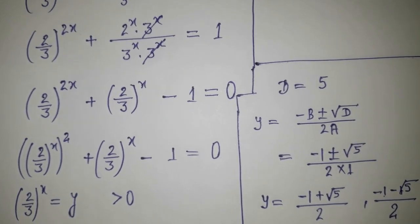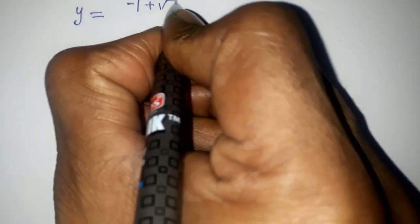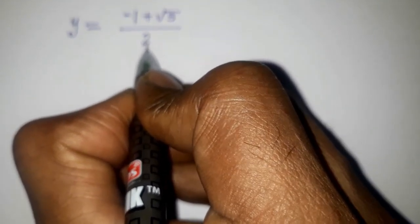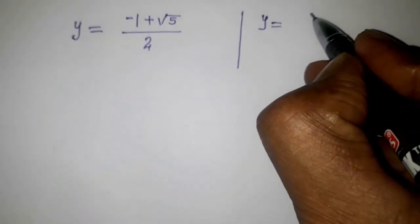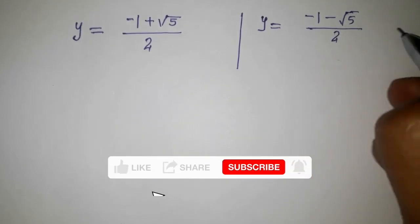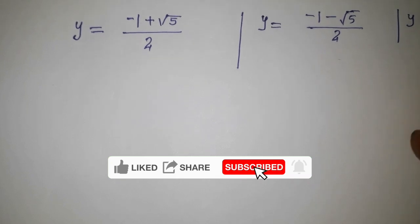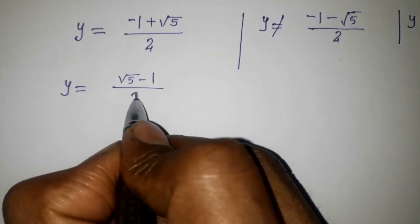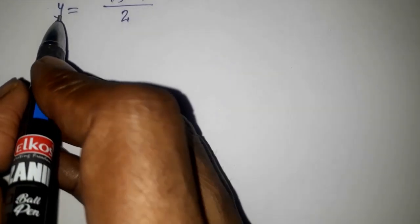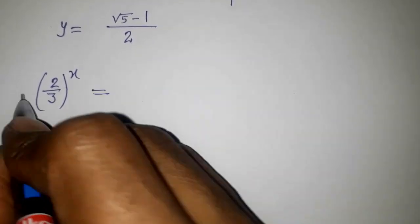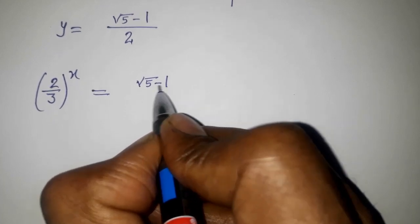We have two numbers. The second value, (minus 1 minus root 5) divided by 2, is negative and we need y greater than 0, so that number is neglected. We take only y equals (root 5 minus 1) divided by 2. And since y is (2/3) to the power x, we write: (2/3) to the power x equals (root 5 minus 1) divided by 2.